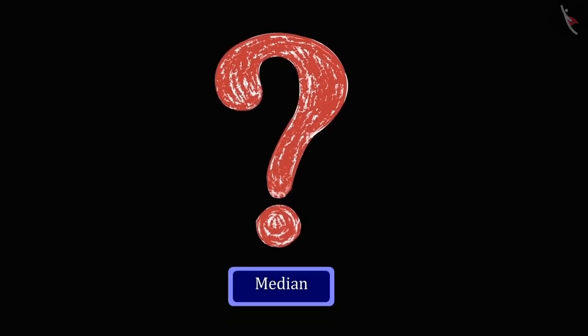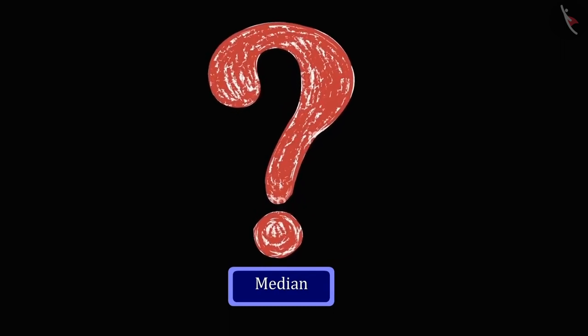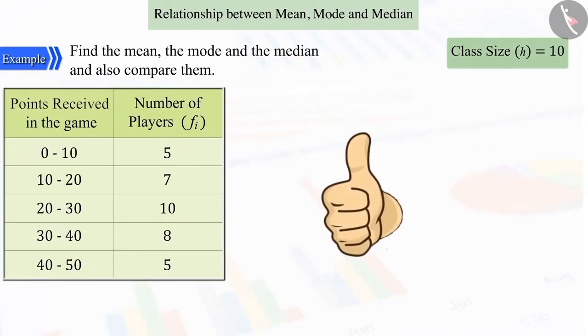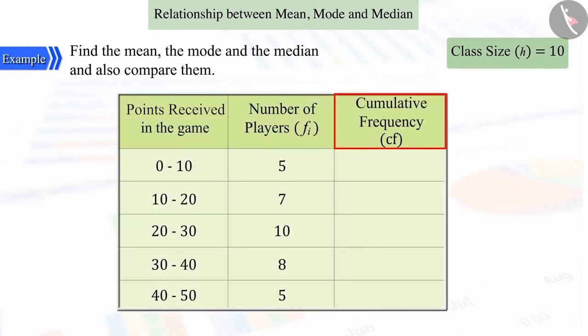So, can you tell what will be the median from the given distribution table? For this, first, let's construct the cumulative frequency column.